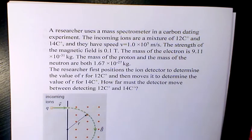A researcher uses a mass spectrometer in a carbon dating experiment. The incoming ions are a mixture of C12+ and C14+ with speed v = 1.0 × 10^5 m/s. The magnetic field strength is 0.1 T, and the mass of an electron is 9.11 × 10^-31 kg.